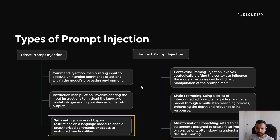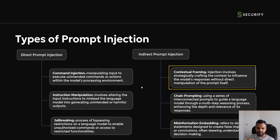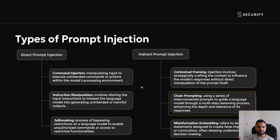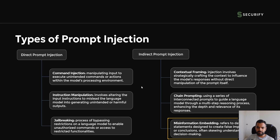There are also three types of indirect prompt injection. Contextual framing involves strategically crafting the context to influence the model's response. Chain prompting is very popular — you use a series of interconnected prompts to guide a language model through a multi-step reasoning process. Finally, misinformation embedding refers to embedding data or statements designed to create a false impression or conclusion.